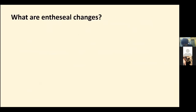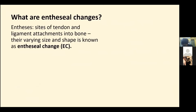So, what are enthesial changes? Entheses — singular enthesis — are the sites where tendons and ligaments attach into bone. They can vary in size and shape, and this variation is known as enthesial change, which is often abbreviated to EC.